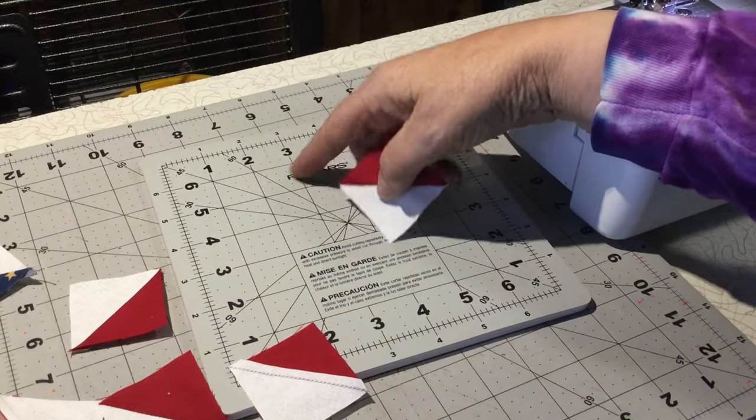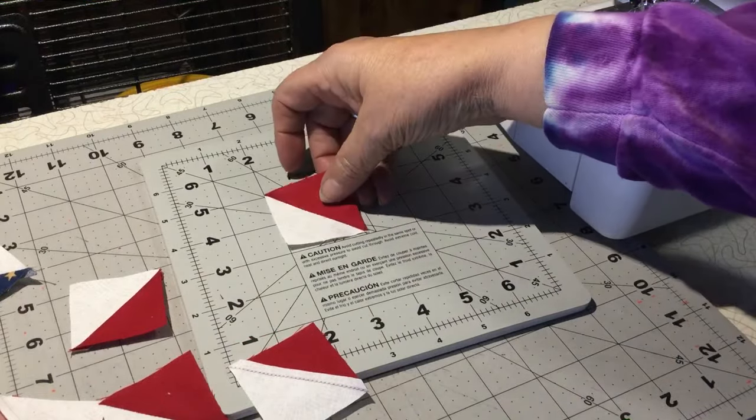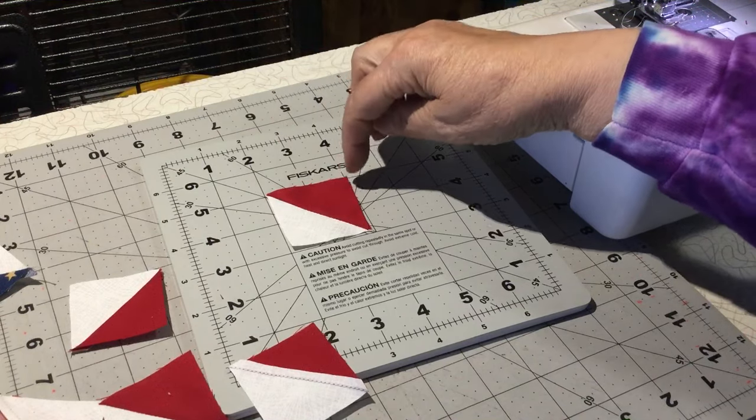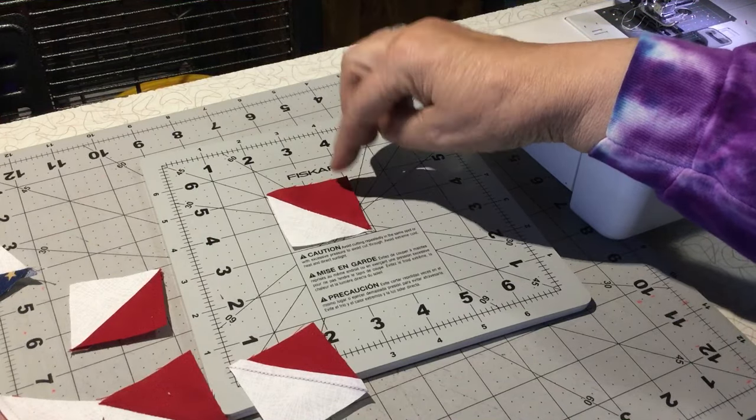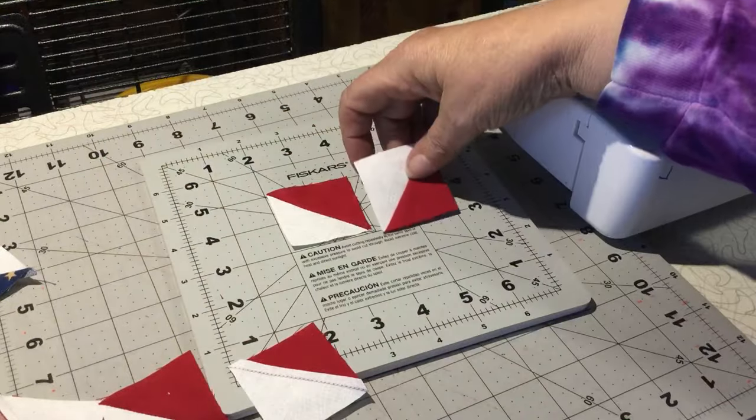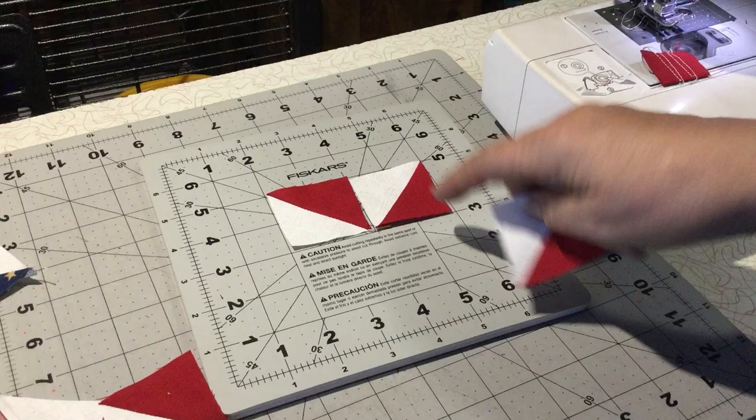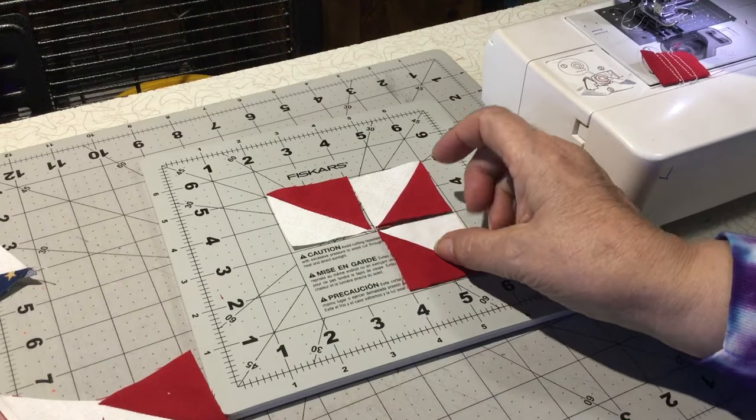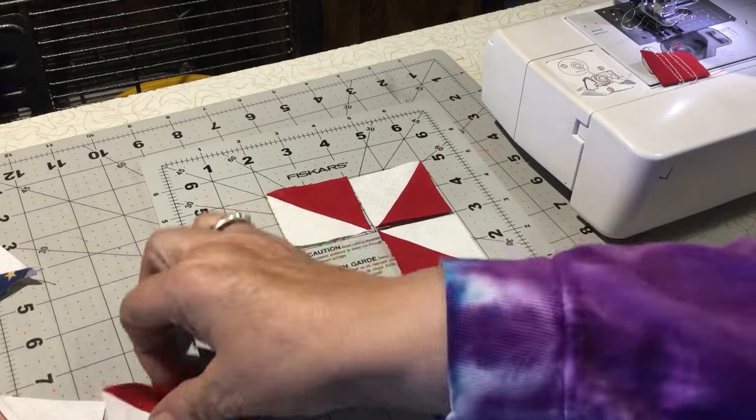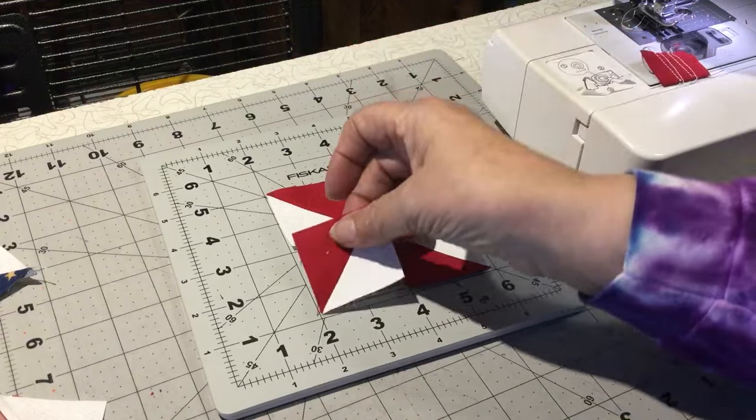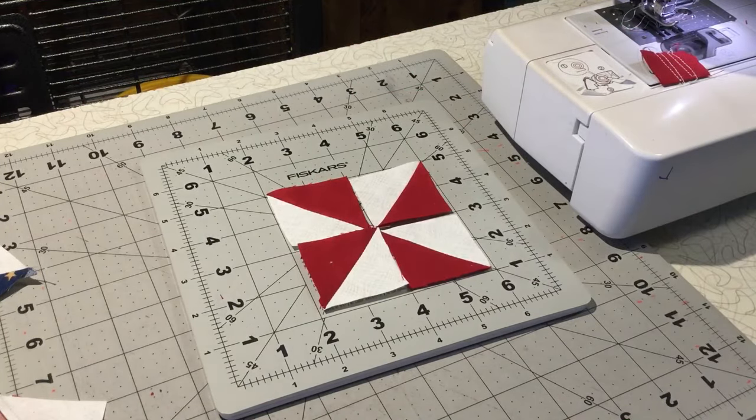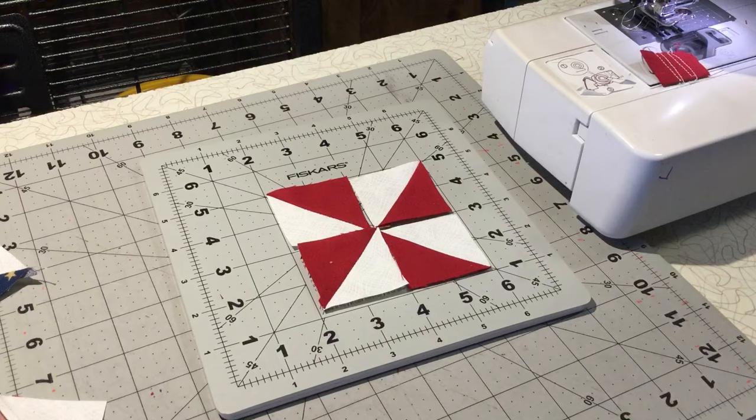Start at your top corner. What I like to do is have the color. This one's at noon. This one will be at 3. This point's at 3. So this red point will be down at 6, and this red point will be at 9. And then you get your pinwheel block.